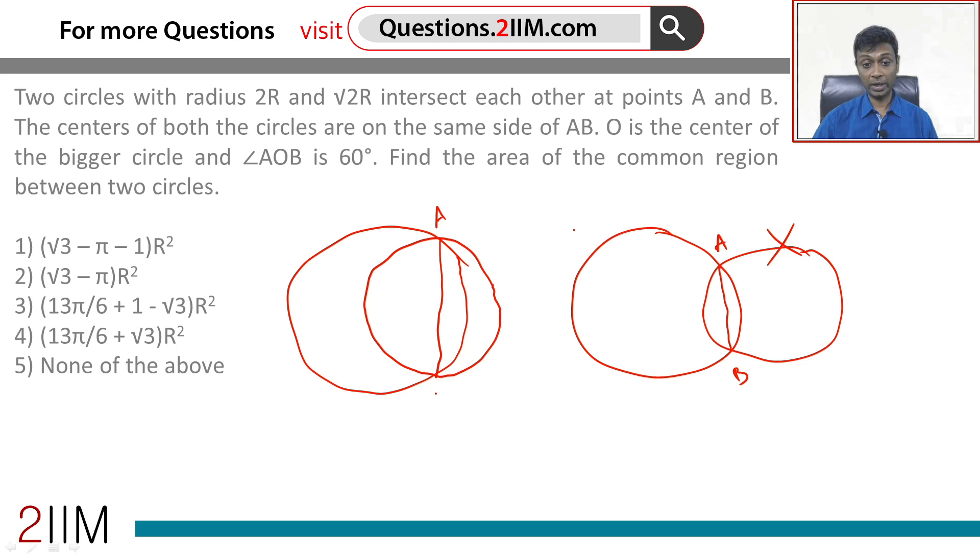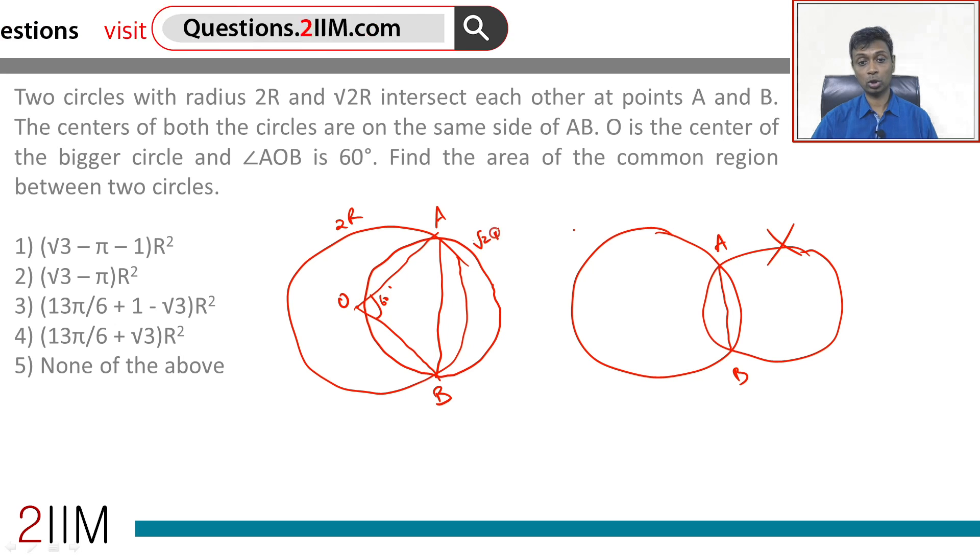This itself is difficult to get, keep an eye on this. O is the center of the bigger circle, so O is the center of the bigger circle here. Angle AOB is 60 degrees. Bigger circle is 2R, smaller circle root 2R.